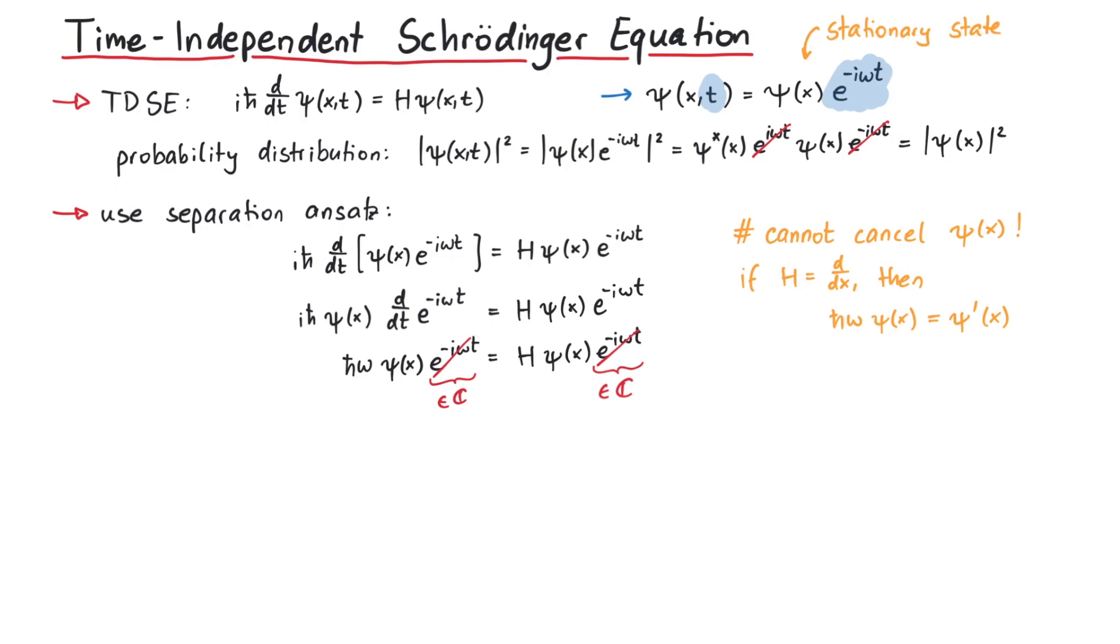Now back to the Schrödinger equation. If we investigate the factors here, we notice that they have units of energy, so we can collect them in a new variable called E, for energy. This leads to a very simple-looking eigenvalue problem.